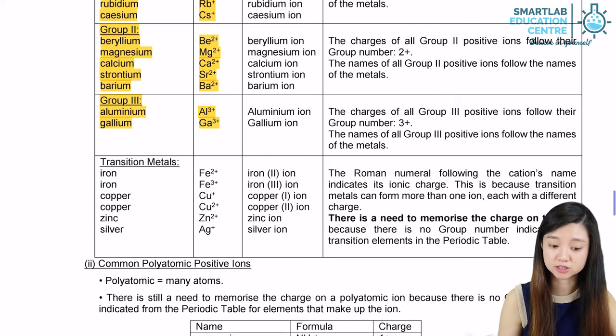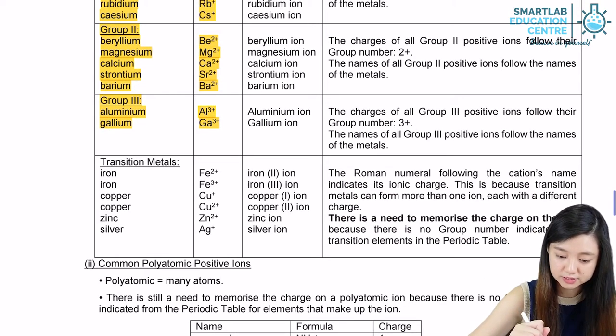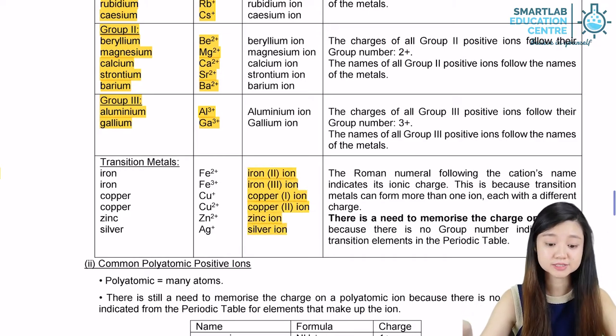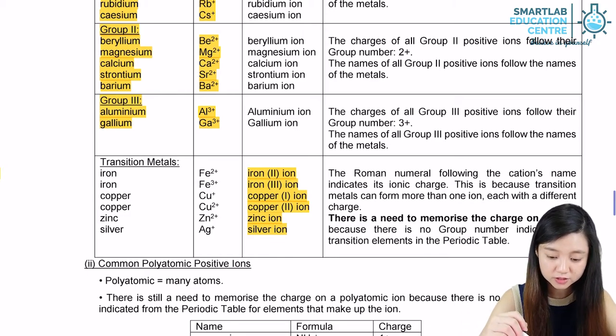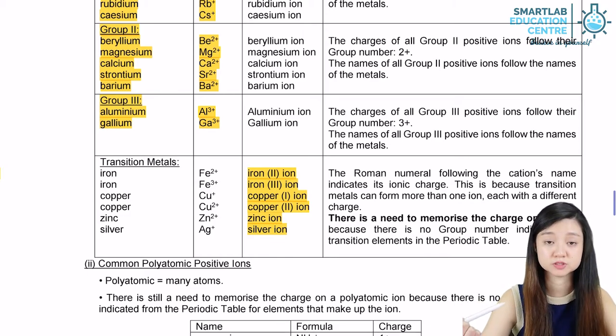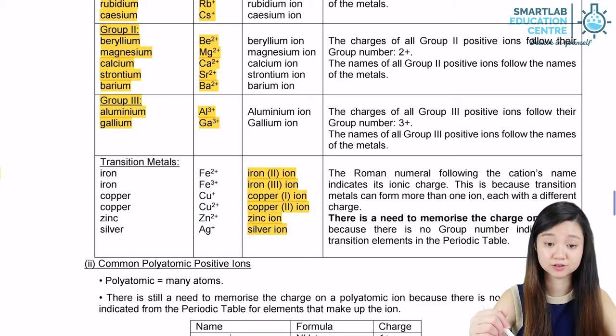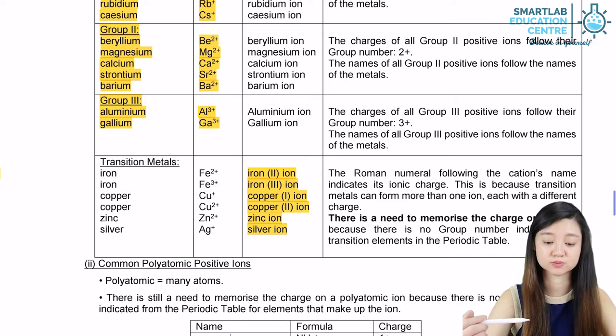And the transition metals are actually a little bit special because the charge actually comes from the Roman numbers written here. Iron II, iron III will be iron 2 plus and iron 3 plus. While copper I, copper II will be copper plus and copper 2 plus. The exception here will be the zinc ion and silver ion because they already have their own charge, zinc being a 2 plus charge and silver being a plus 1 charge.